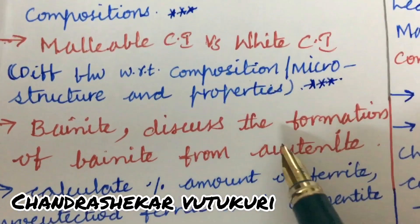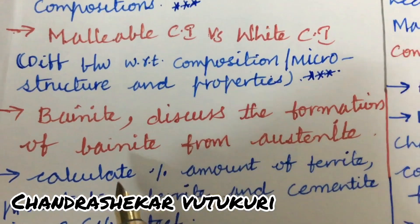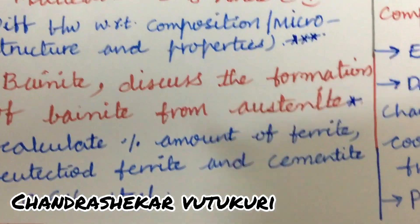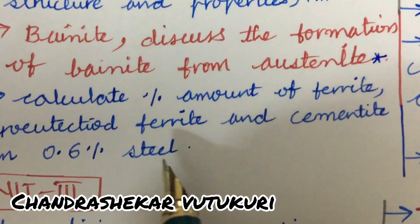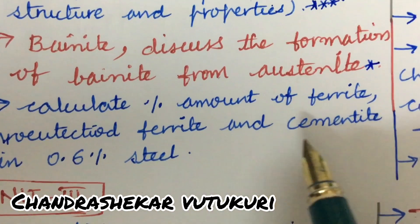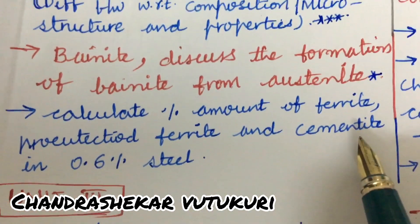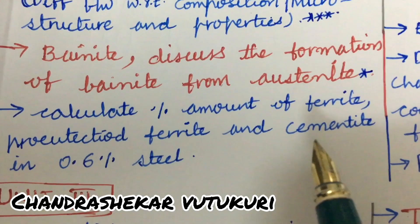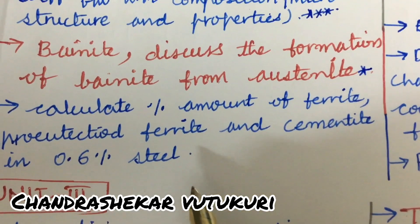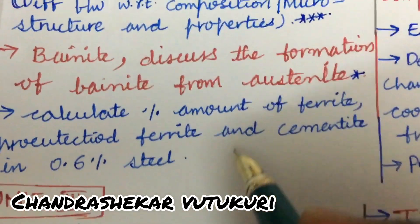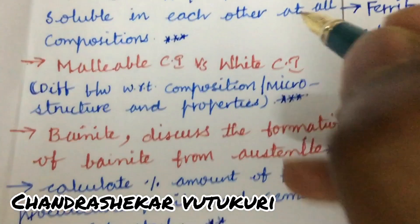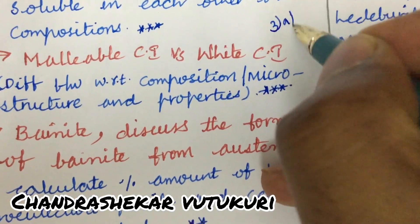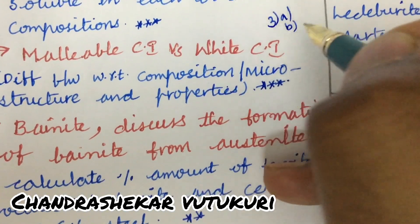Bainite — discussing the formation of bainite from austenite — is said to be very important. Calculate the percentage amount of ferrite, pro-eutectoid ferrite, and cementite in 0.6 percent carbon steel, which has been asked several times. From this part we can expect questions covering 3A as well as 3B.